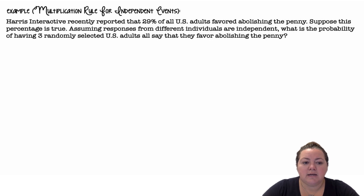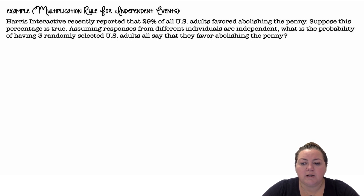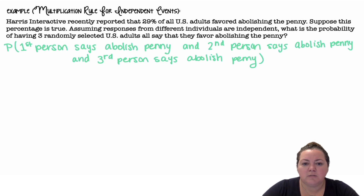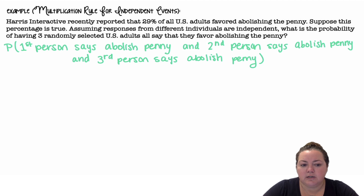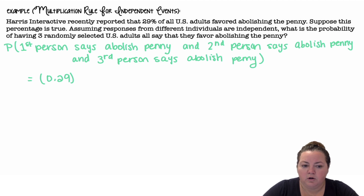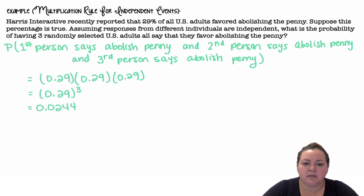Multiplication rule for independent events example: Harris Interactive recently reported that 29% of all U.S. adults favored abolishing the penny. Suppose this percentage is true. Assuming responses from different individuals are independent, what is the probability of having three randomly selected U.S. adults all say that they favor abolishing the penny? That means we want P(first person favors) and P(second person favors) and P(third person favors) — essentially P(A) × P(A) × P(A), since the probability is 29% each time. So 0.29³ = 0.0244.